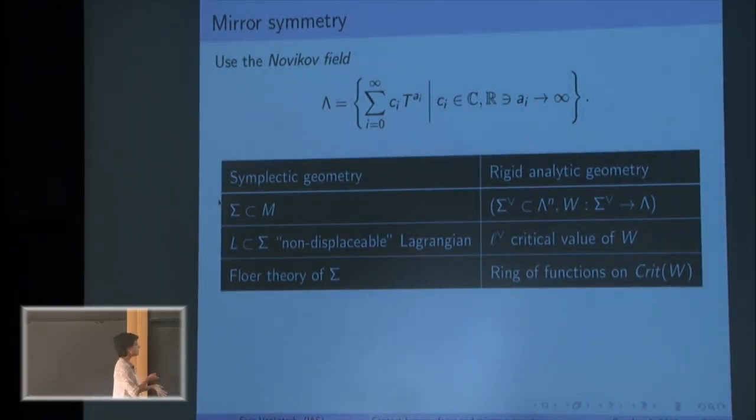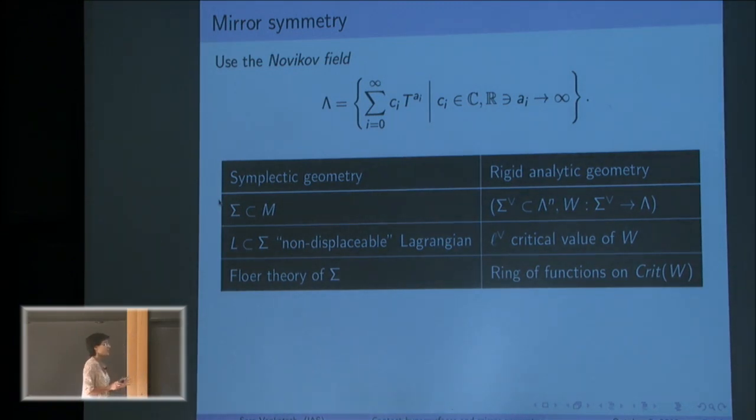Mirror symmetry tells me that there's some kind of important submanifolds called non-displaceable Lagrangians in my hypersurface potentially, and these correspond to critical values of this function.